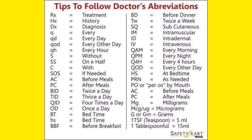SQ means subcutaneous — Q means cutaneous and S means sub, so SQ means subcutaneous injection. IM means intramuscular — generally these are injections given in the muscle, such as the deltoid muscle. ID means intradermal, meaning within the skin. IV — you know it is given in the vein — IV means intravenous.